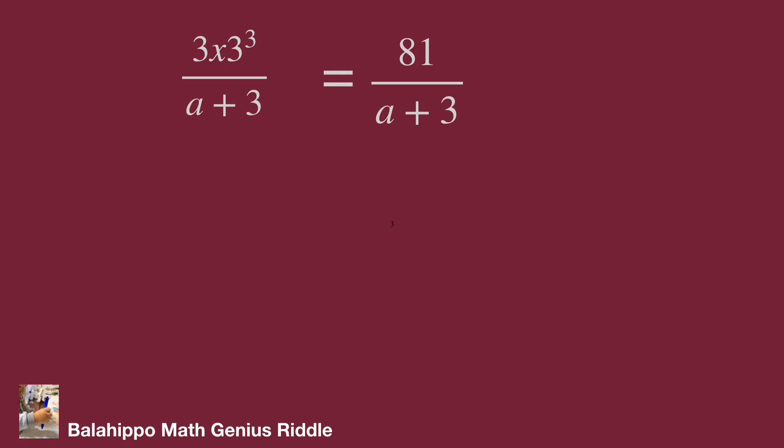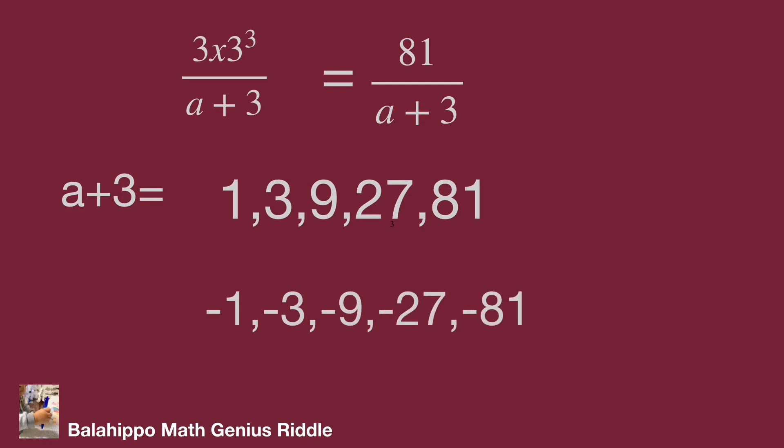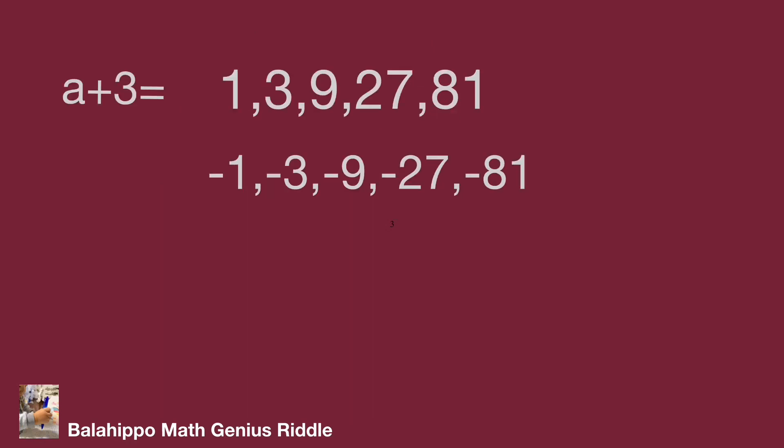So the denominator a+3 should be a factor of numerator 81. So a+3 could be 1, 3, 9, 27, and 81, and also -1, -3, -9, -27, and -81.